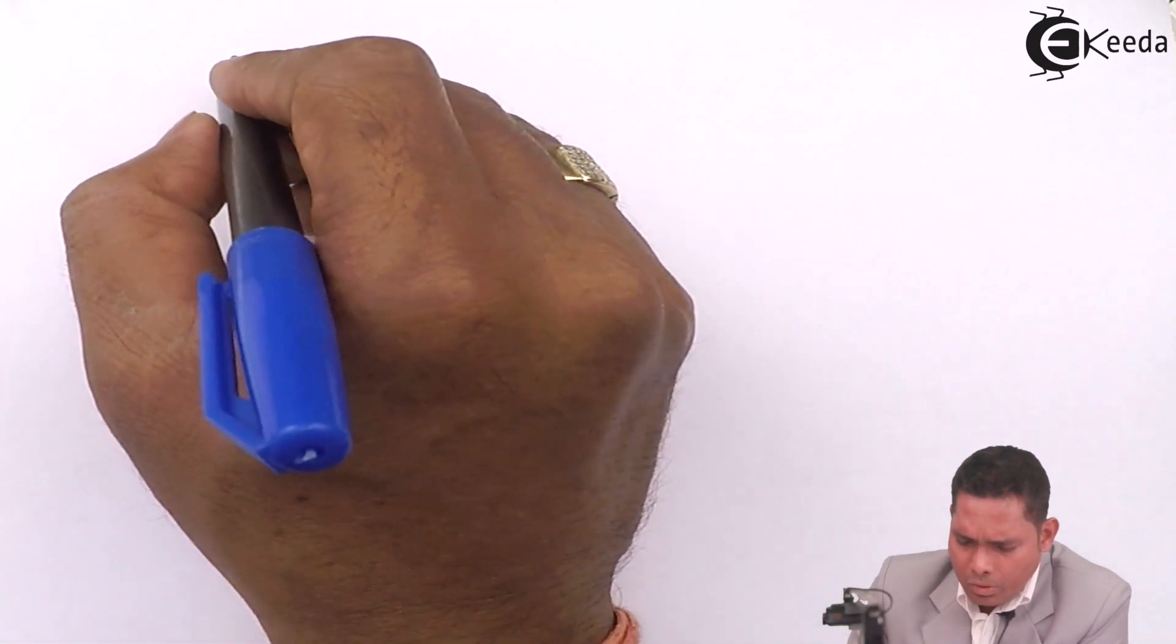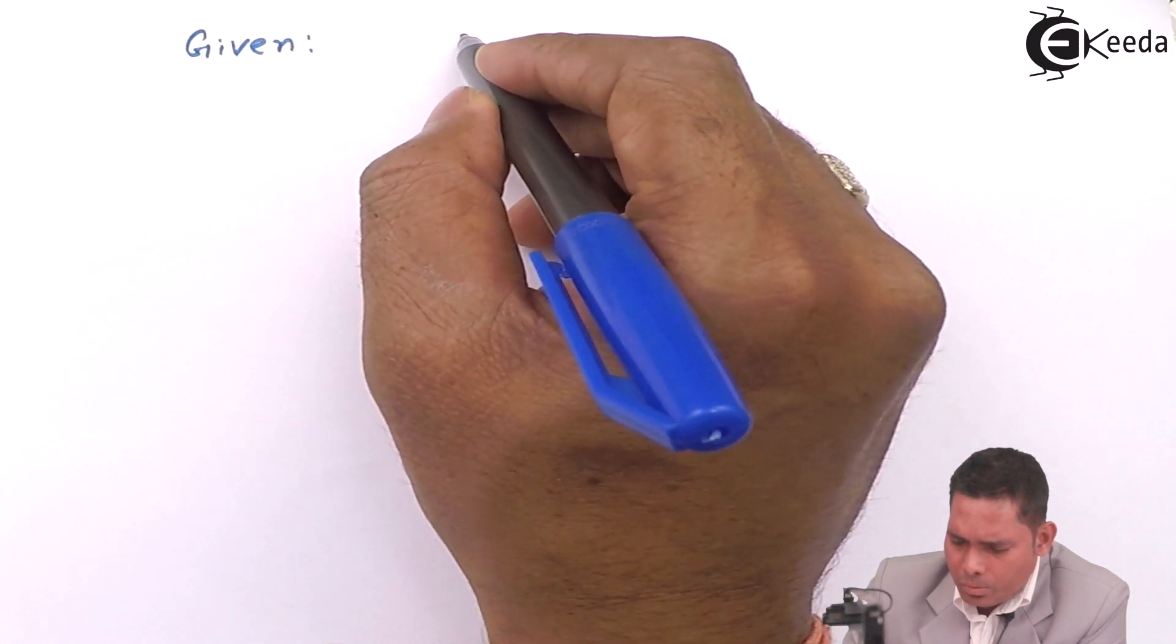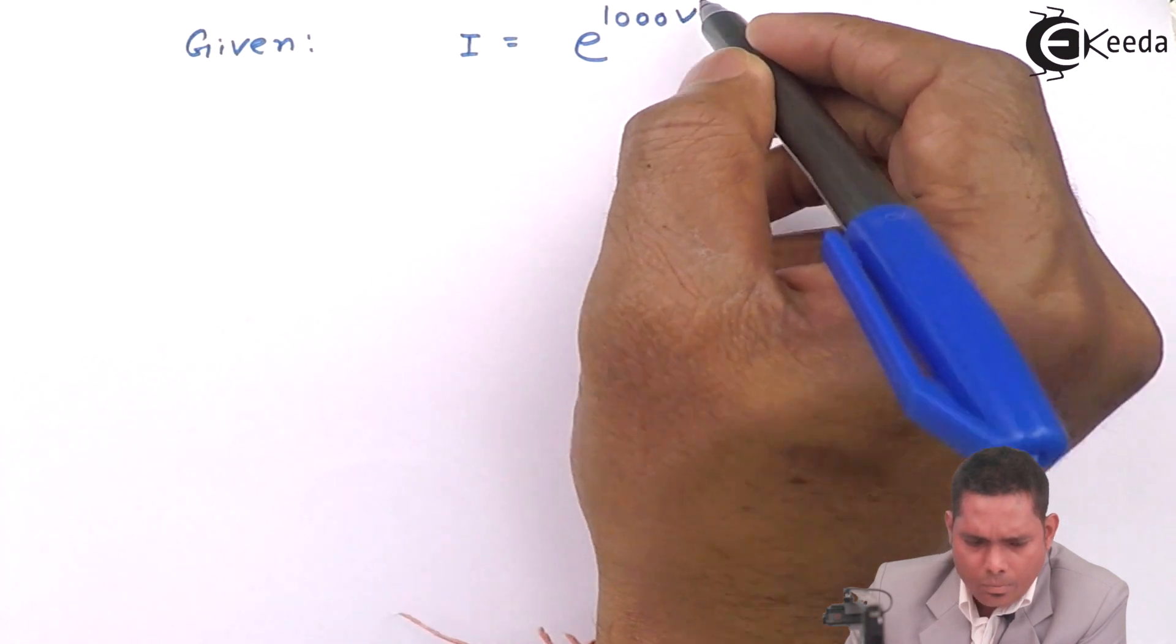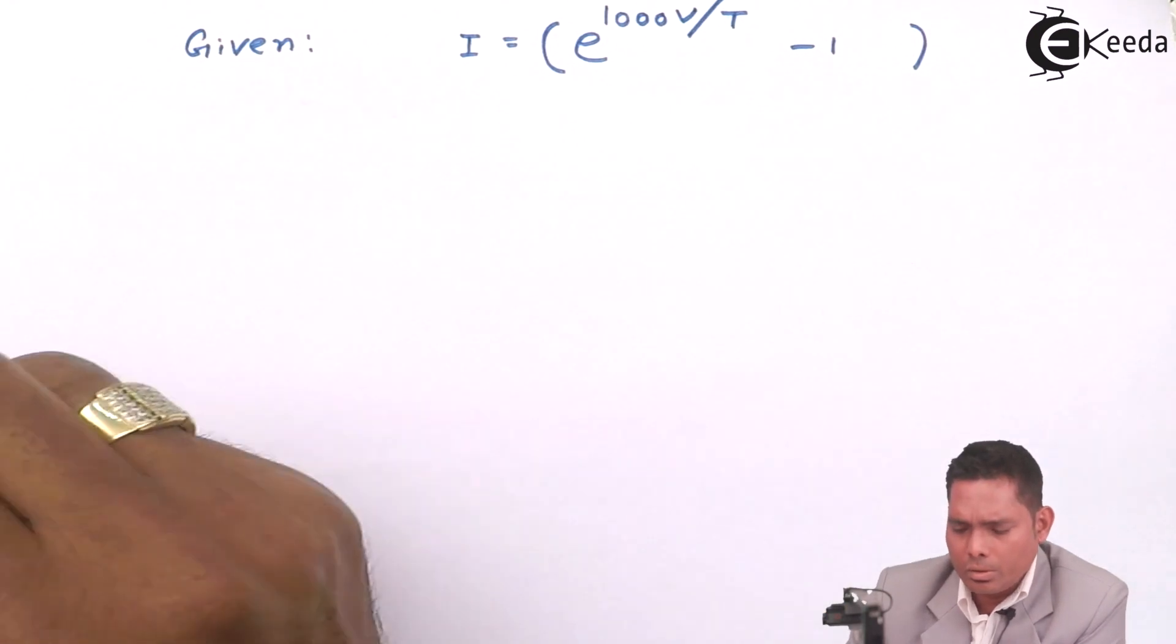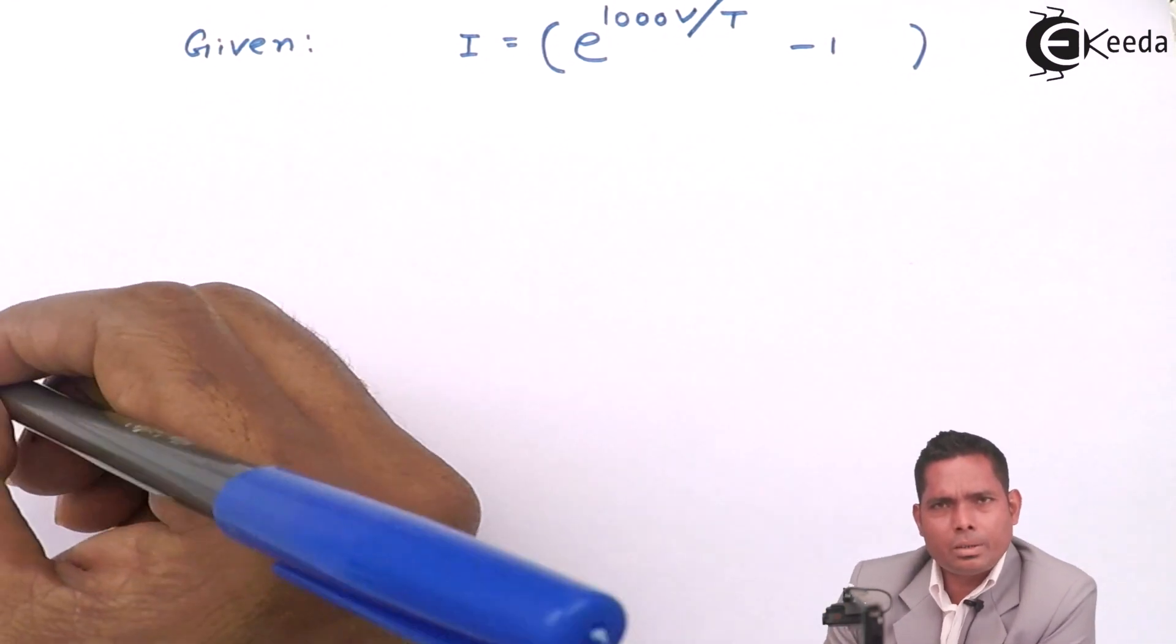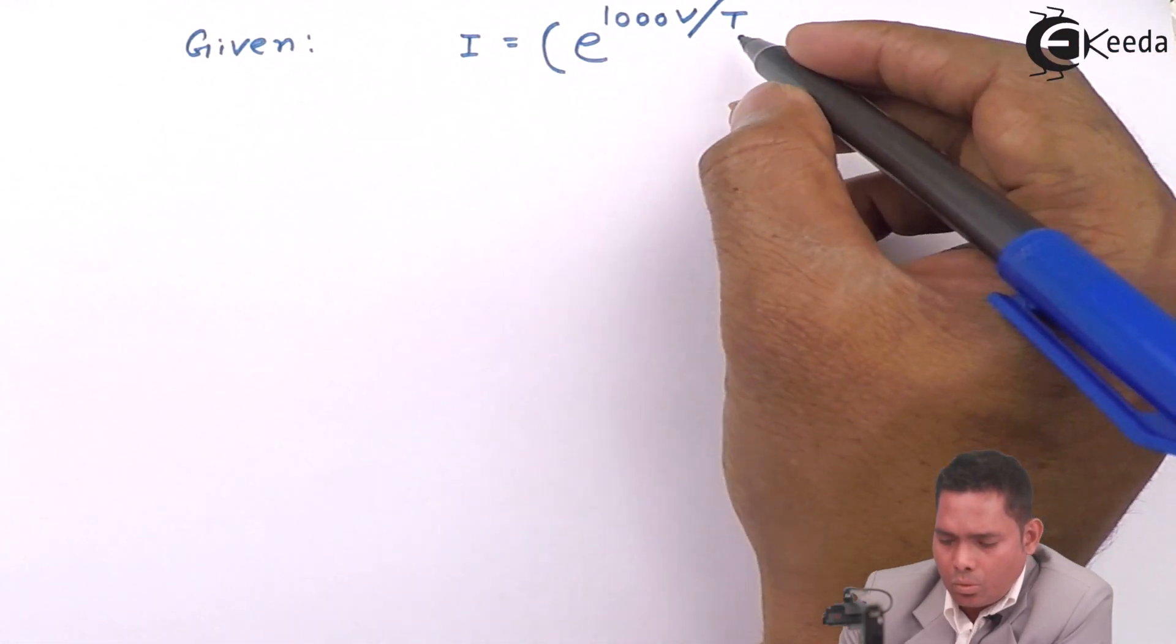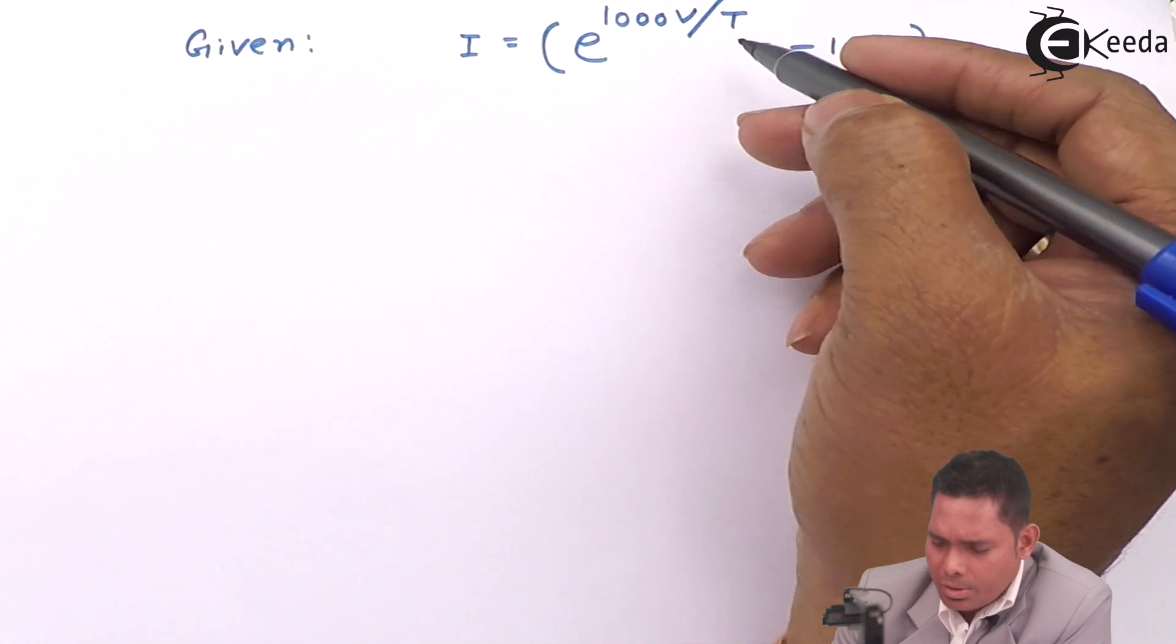I have the given equation: I equals e raised to 1000V/T minus 1. I want error in the measurement of current, so I will differentiate this equation with respect to the voltage.